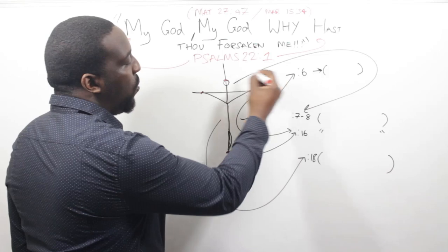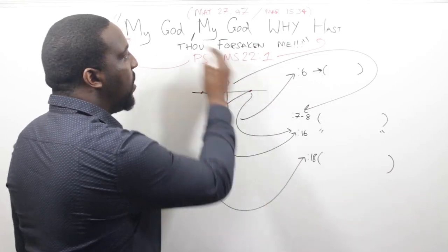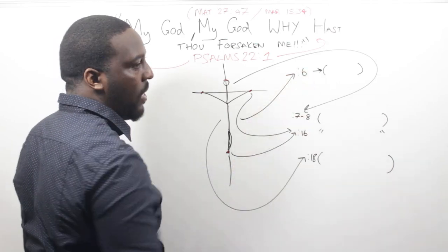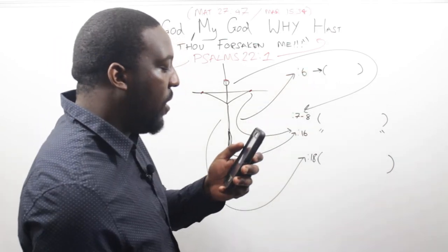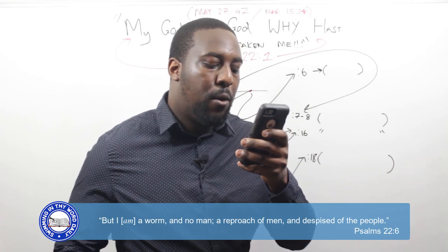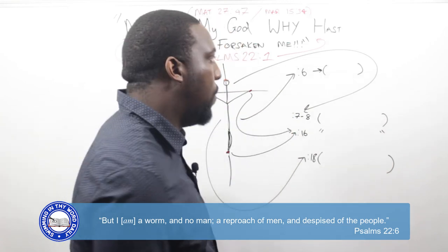The first thing we want to identify from Psalms 22, apart from verse 1, is verse 6 in Psalms 22, and it reads, But I, a worm, and no man, a reproach of men, and despised of the people.